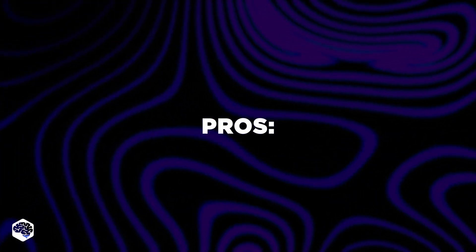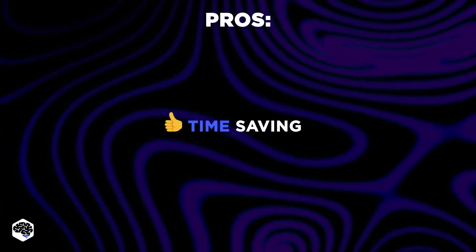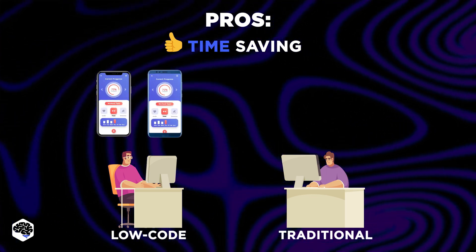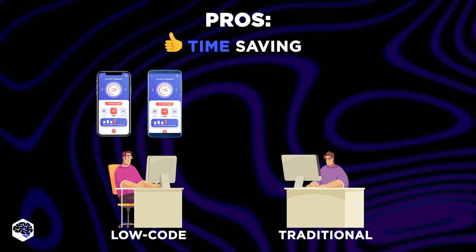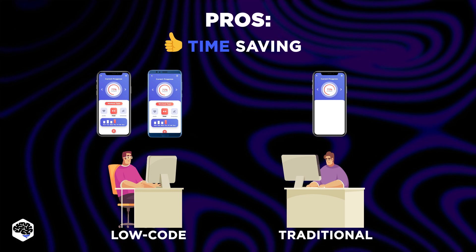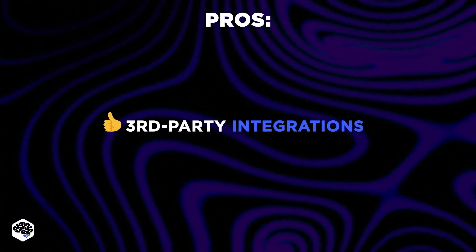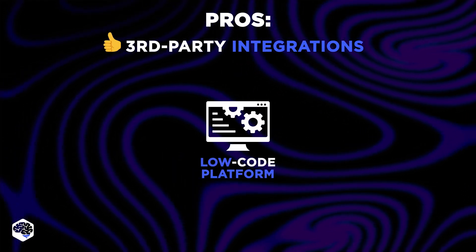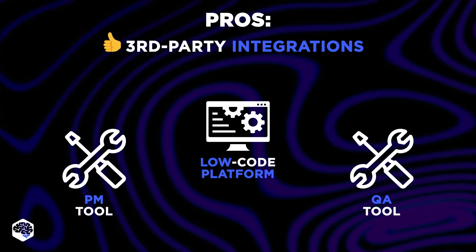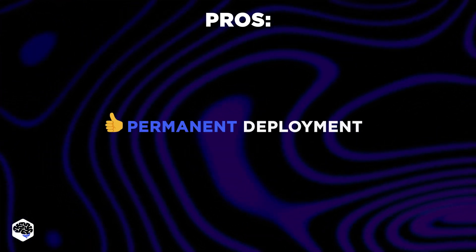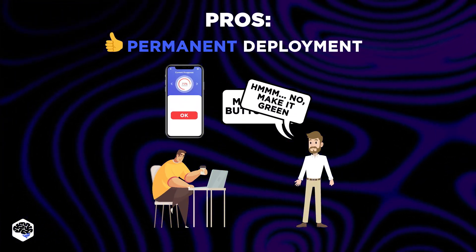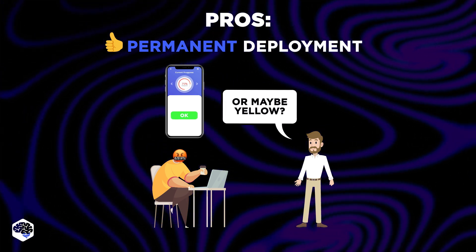So the benefits are quite obvious. First, the company saves a huge amount of time. The low-code development process itself takes less effort and, moreover, ensures that the finished product is cross-platform. Traditional development approaches can't deliver that speed. The second advantage is the availability of external integration — many services support working with PM tools and quality assurance, simplifying project management. And finally, the possibility of permanent deployment: at any time, you can fix a potential bug or roll back to the previous version in two clicks, when there were no problems yet.